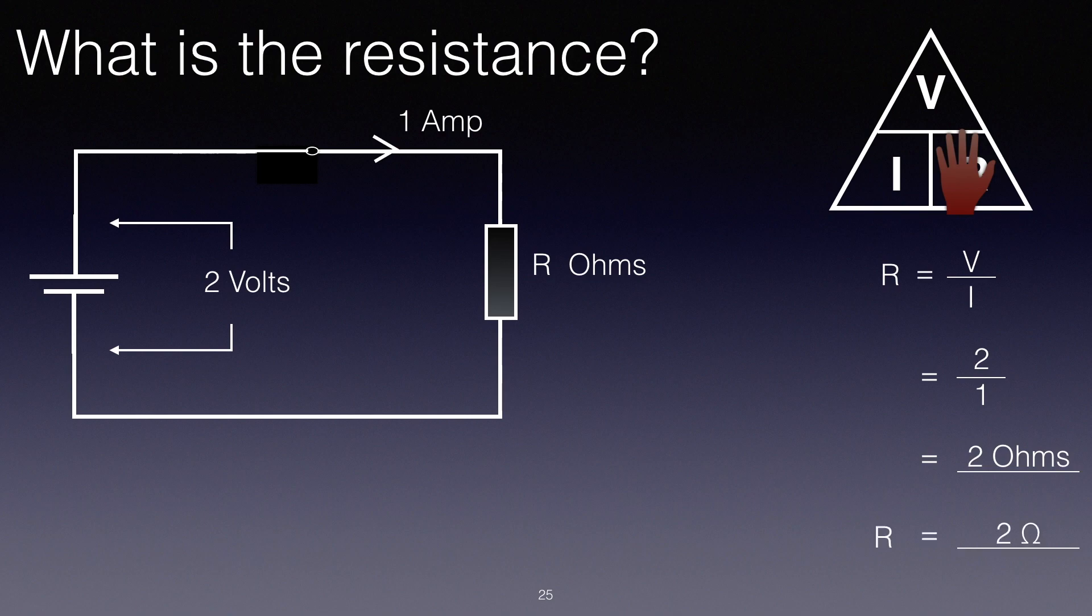And up until now I've been writing out the word in full, O-H-M-S, but now I'm using the abbreviation. R equals 2 ohms. And there's a sign, omega.